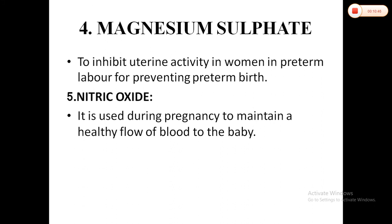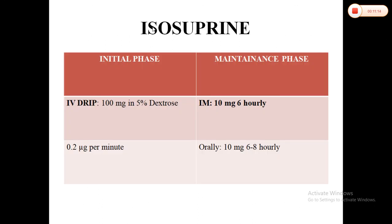The fourth tocolytic is magnesium sulfate, used to inhibit uterine activity in women in preterm labor to prevent preterm birth. The fifth drug is nitric oxide, used during pregnancy to maintain a healthy flow of blood to the baby and to maintain proper blood pressure.